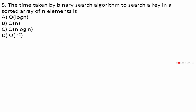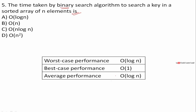The time taken by binary search algorithm to search a key in a sorted array of n elements. In binary search, the worst case is O(log n) because it would be in the form of a tree. Worst case and average case are both O(log n). The best case, where the root node is the target, is O(1). Generally we refer to the average performance, which is log n. So A is the answer: log n.